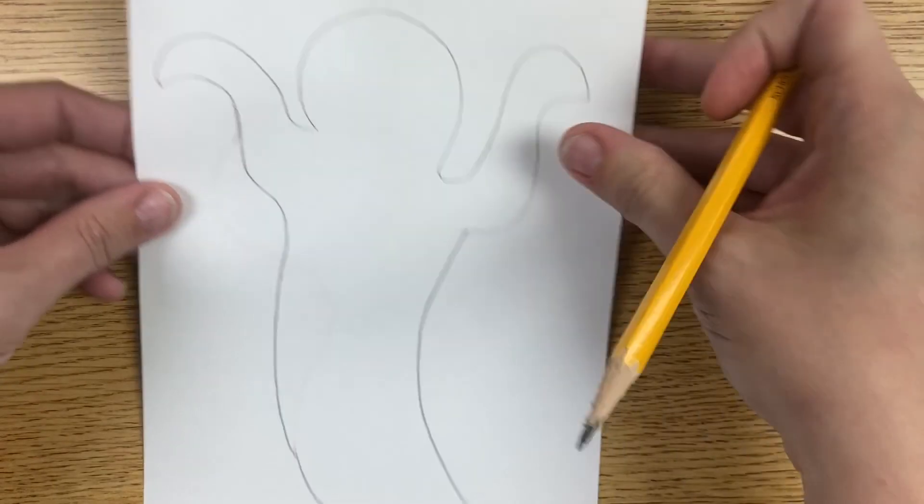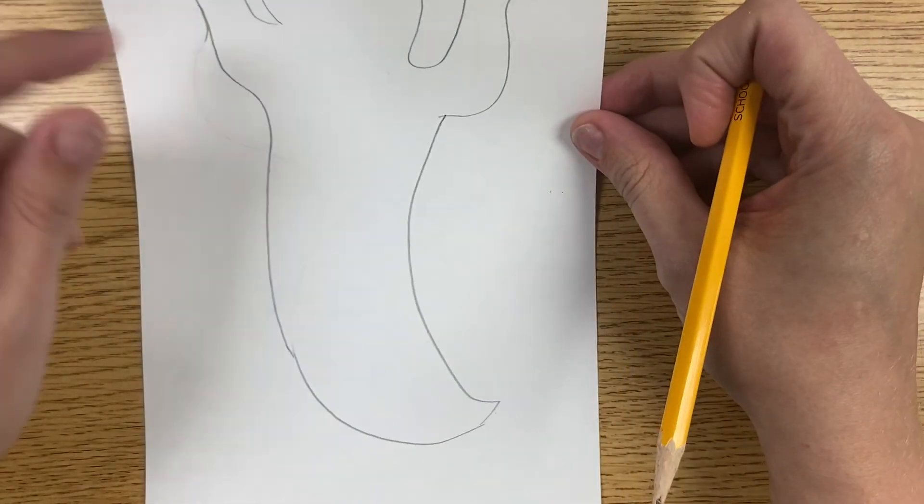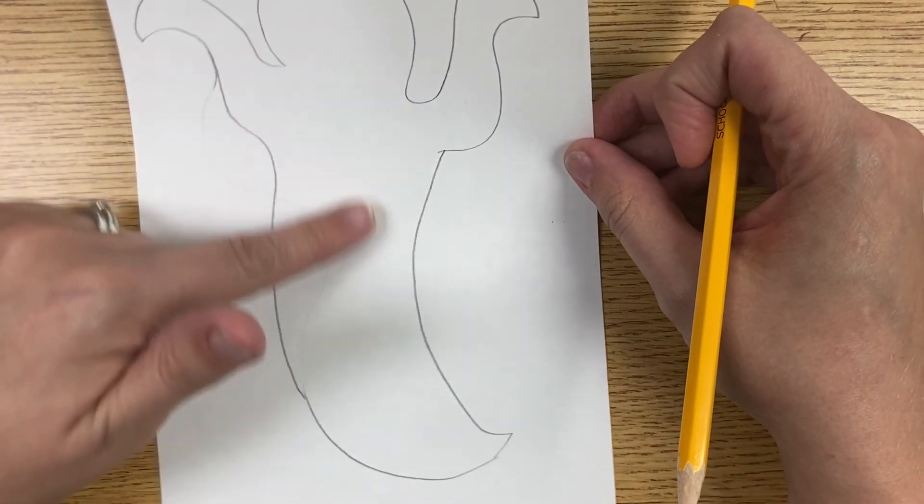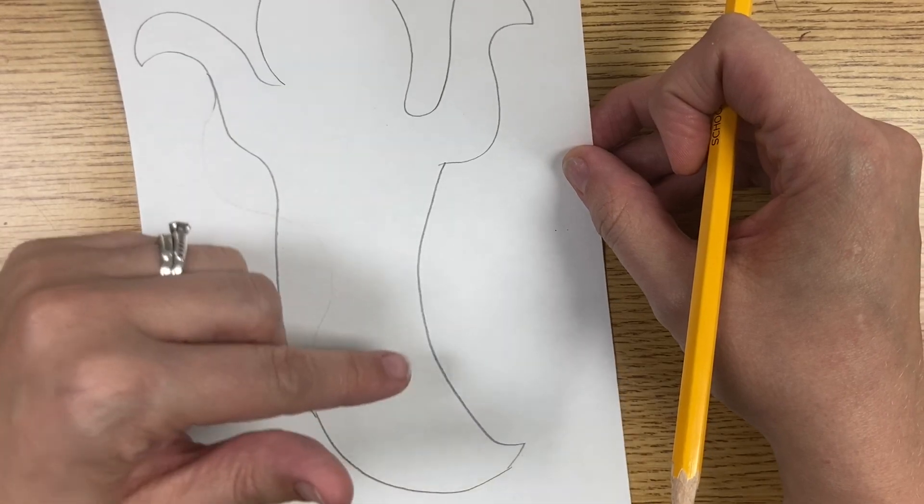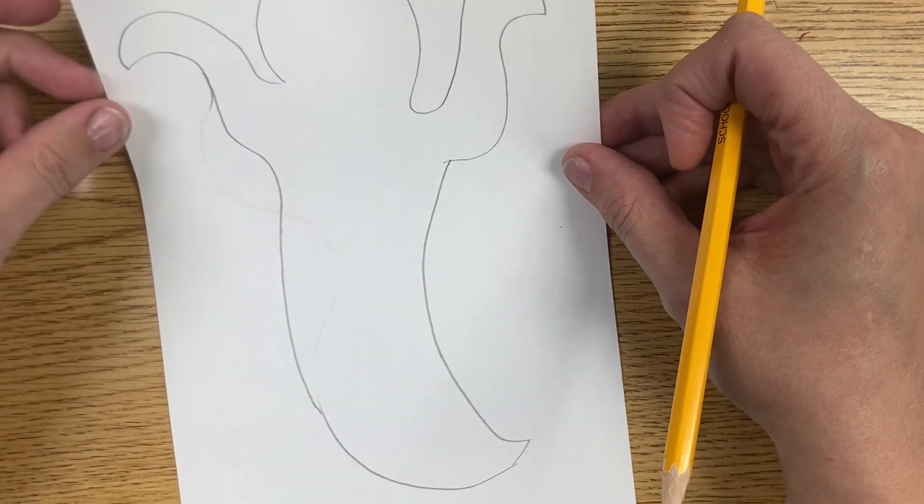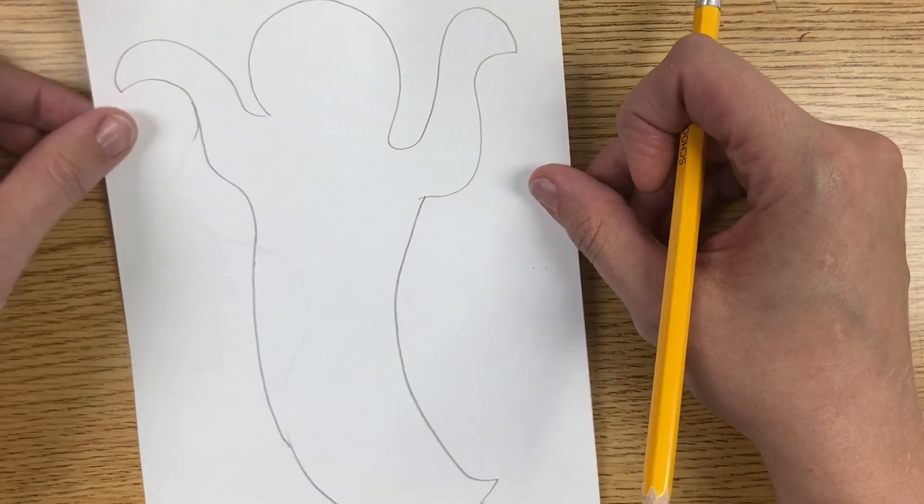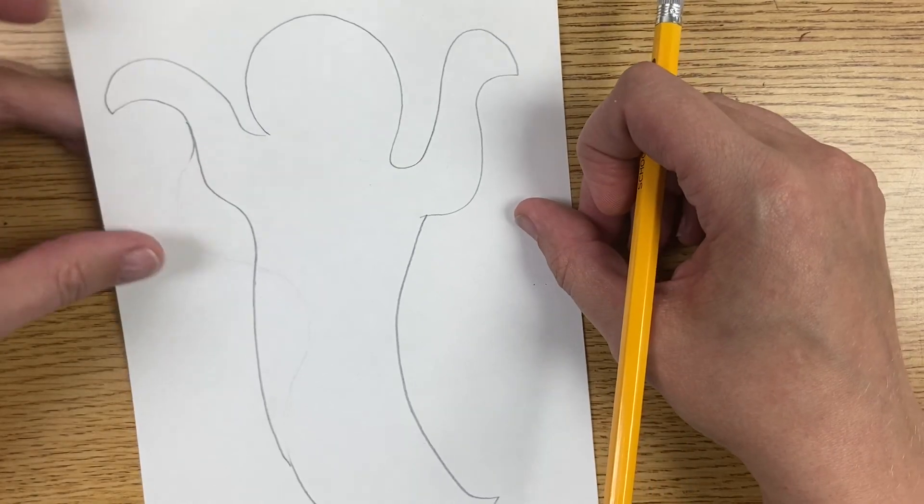Once you have your shape and you've got your shape on your paper, make sure not to draw anything on the inside. We don't want a face. We don't want lines. We don't want a design. We're just making an outline that fills up most of our space.